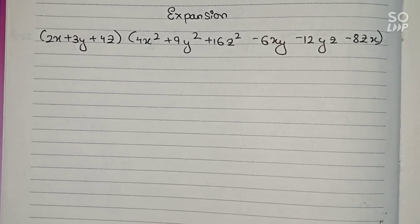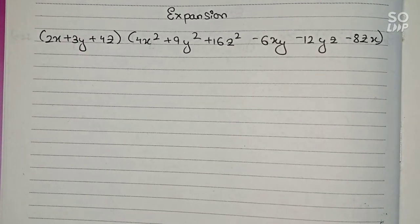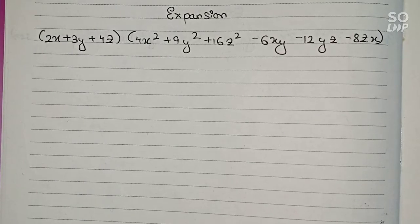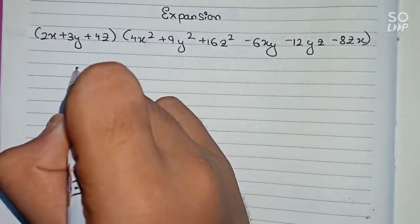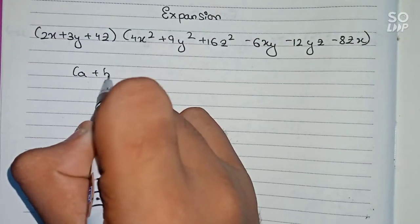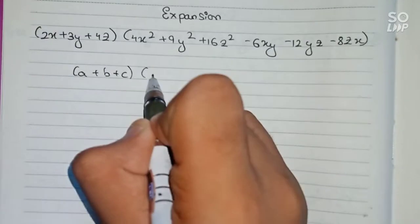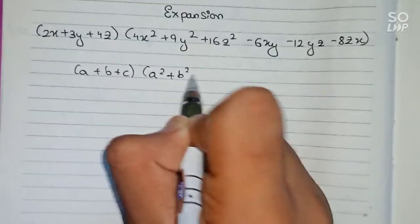This is a question on algebraic identities. For this question, we will use the identity: (a + b + c) multiplied by (a² + b² + c²